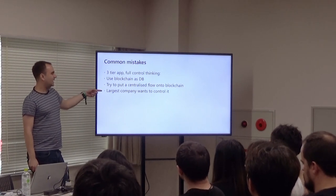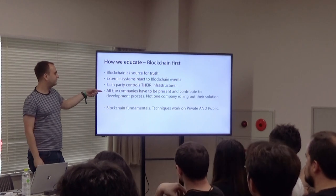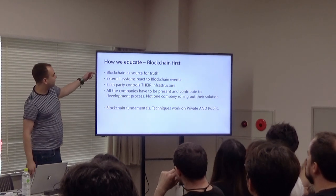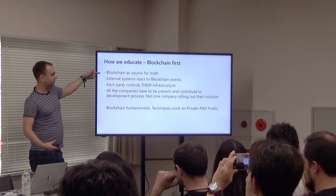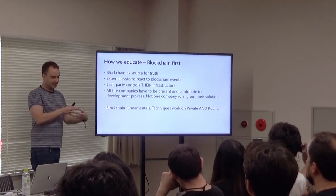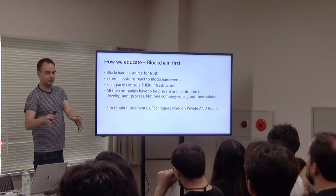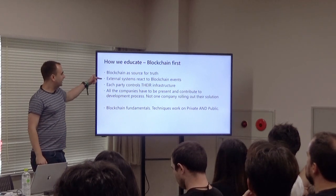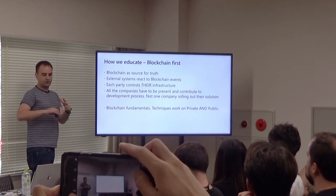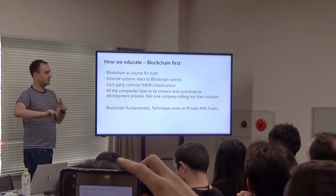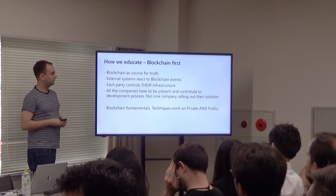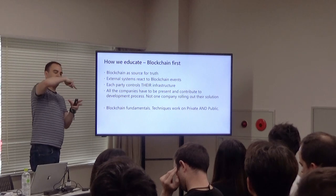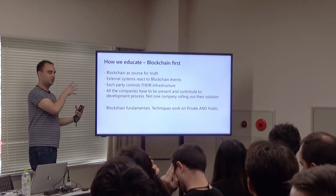The common mistakes: they have a three-tier application, they're used to controlling everything, and they want to use the blockchain as a database. The biggest mind shift is moving from 'we have a database that we control' to 'we have a shared state — a shared understanding between all parties.' We also need to get them to understand that their backend systems are going to react to what has happened in the blockchain via oracles. Nothing is confirmed until it's sent into the shared state, come back via oracles, and updated the backend reporting systems.